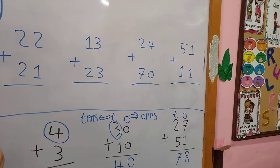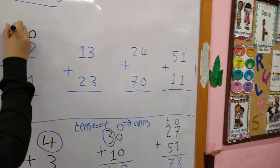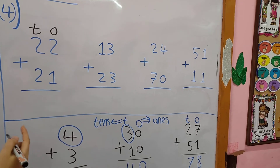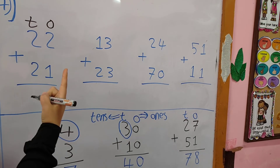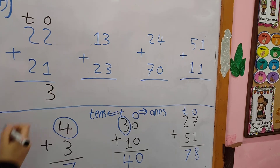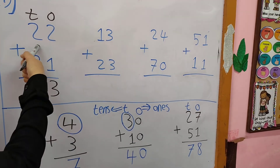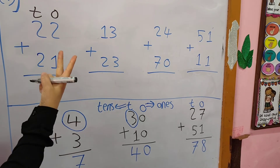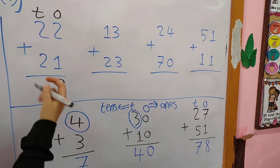22 plus 21. The first thing: write O and T. In the 1's column: 2 plus 1. I put 2 in my mind and 1 on my fingers and count after 2. After 2: 3. In the 10's column: 2 plus 2. I put 2 in my mind and another 2 on my fingers and count after 2: 3, 4. So the answer is 43.